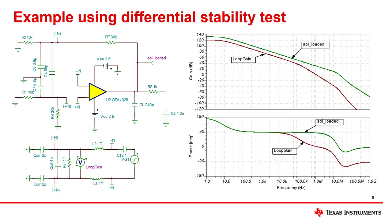Once you've wired the circuit, you can run the AC analysis. Without any post-processing, the simulation will display two curves, AOL loaded and loop gain.